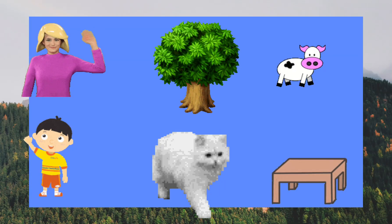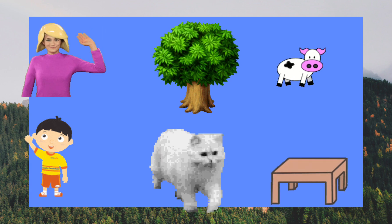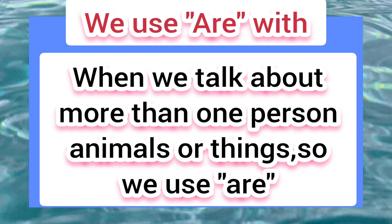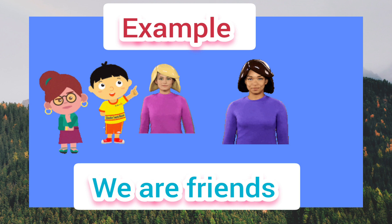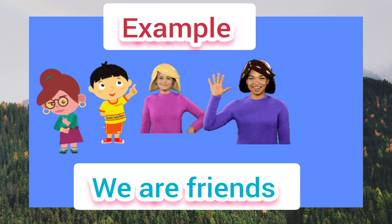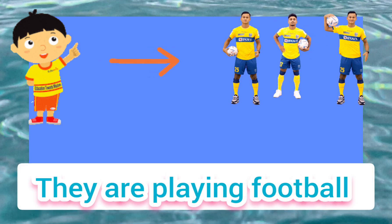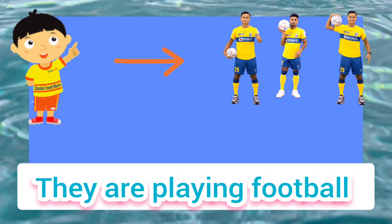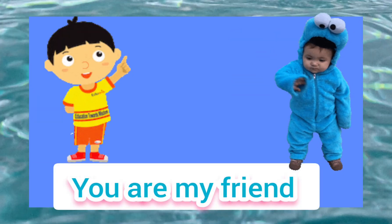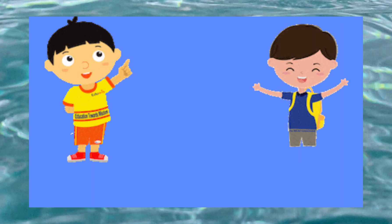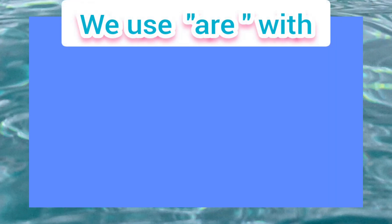Uses of 'are': when we talk about more than one person, animals, or things, we use 'are.' For example, here are more than one person, so we say we are friends. They are more than one person, so we say they are playing football. We also use 'are' with 'you' — for example, you are my friend, you are a good boy.